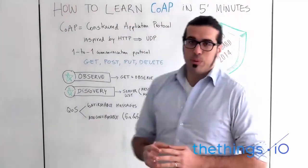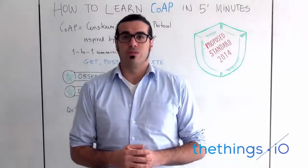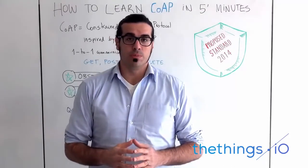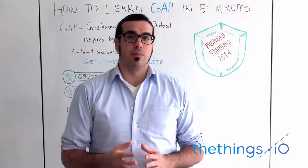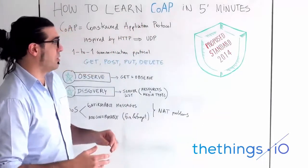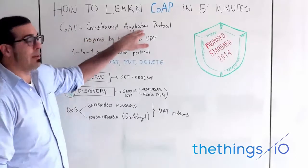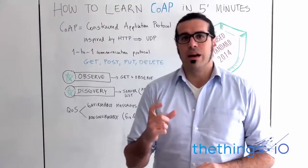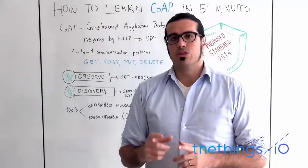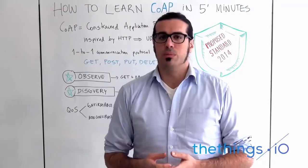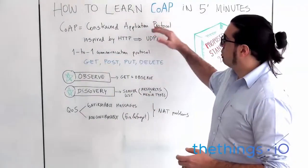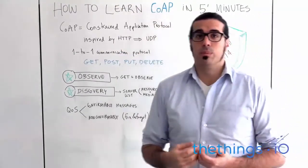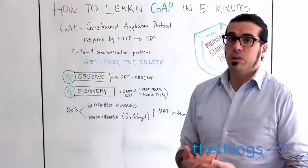CoAP is actually a proposed standard since June 2014, so it's a very new communication protocol that is still not standard, but it's going to be one of the future standard protocols on IoT. It means Constrained Application Protocol, meaning it was specifically designed for constrained hardware — hardware that doesn't support, for example, HTTP or TCP/IP. The designers of this protocol, inspired by HTTP, designed CoAP using UDP and IP.